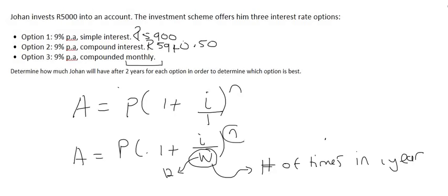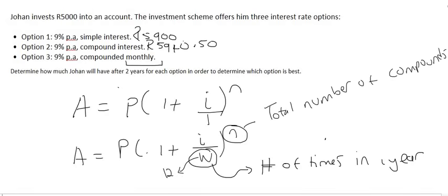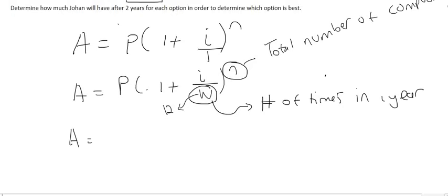Now this number here is the total number of compoundings. Imagine this: your money gets compounded every single month, and you're investing for two years. That means it's gonna compound 24 times in total. So the new formula or the new structure will be like this. It was a nine percent interest rate, so that's nine over a hundred like that. And then I'm just gonna put the little W next to it, which is times 12, to the power of 24.